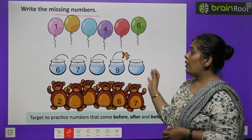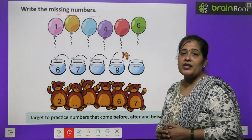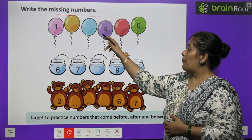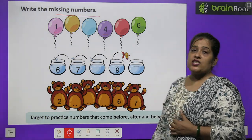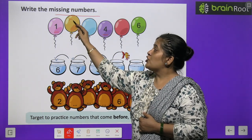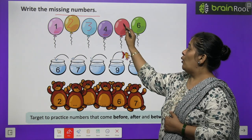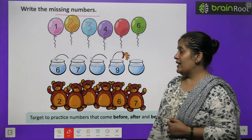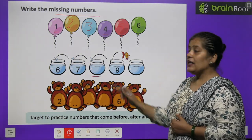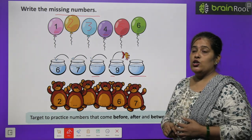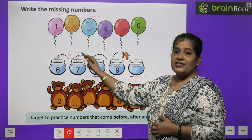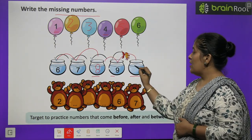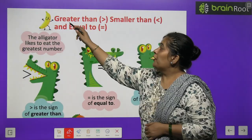Write the missing numbers. Here is a very beautiful picture. Number 1, then 2 blanks, then number 4, again a blank, then number 6. So we fill in: 1, 2, 3, 4, 5, 6. The next row: 7, then a blank, then number 9, and again a blank. So: 7, 8, 9, 10.